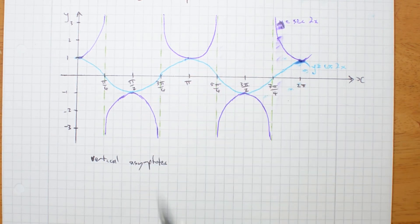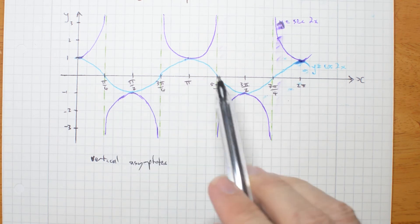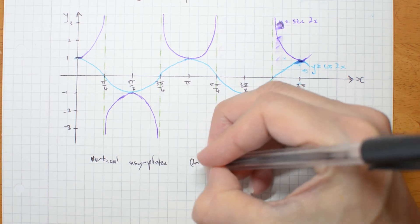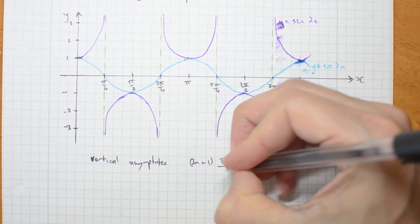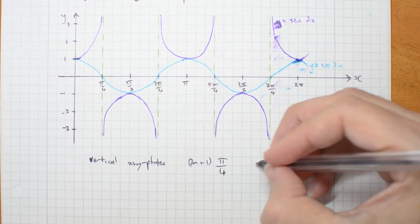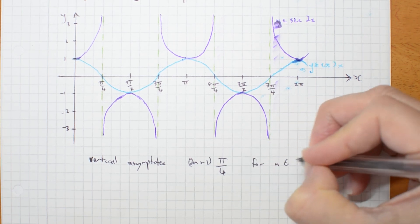Now, where are they? π/4, 3π/4, 5π/4. So they're at (2n+1)π/4. They are odd multiples of π/4, for n integers.